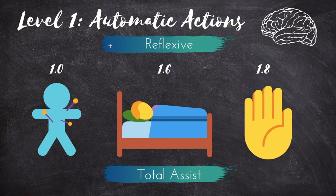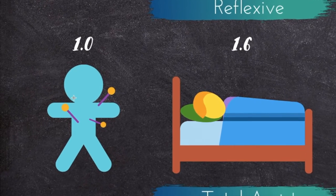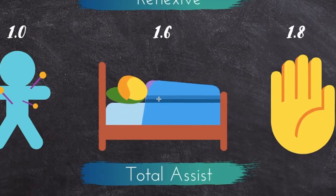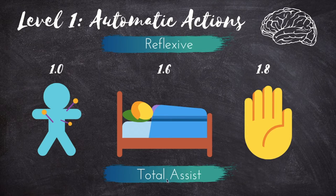The first level is the automatic actions level. A person at this level is extremely cognitively disabled and can really only perform automatic motor and nervous system responses — pretty much one step away from a complete coma. The keyword I associate with this level is reflexive. At 1.0, a person may pull their hand away from a painful prick or grimace when exposed to bright light. As they progress, they may shift their head to follow someone walking in the room. At 1.6 they can roll in bed, and at 1.8 they can raise a body part when asked. A person at this level is totally dependent; all ADLs will require total assistance.